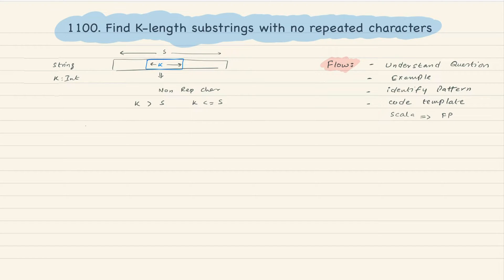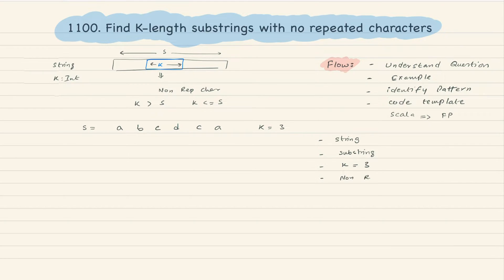Let's take an example: a string which is 'abcdca' and suppose k is equal to 3. The question says find a substring of some size k — which is 3 here — with the condition of non-repeating characters. Considering all these points, we know we can apply sliding window because we have a string, they're asking for a substring, they provided a constant window size, and there is a condition applied on the window.